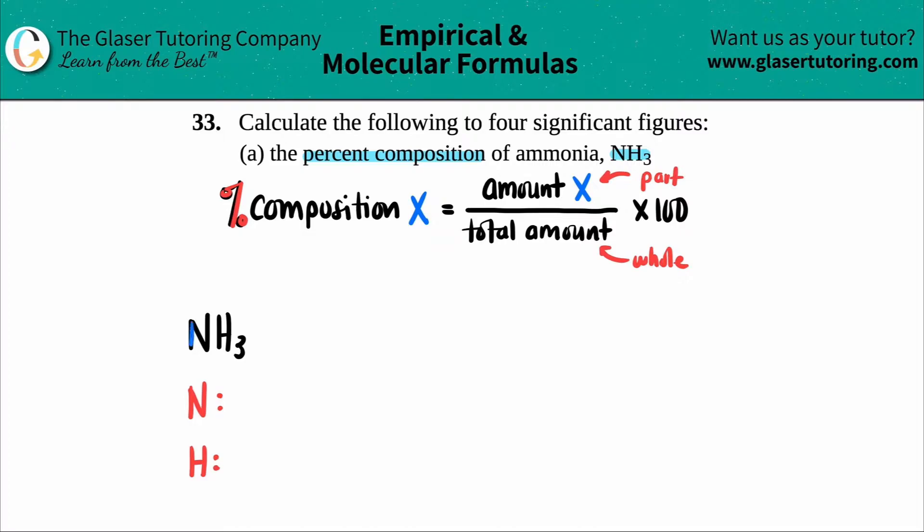So how many nitrogens? Well, here's the N. There's a secret one here. If you just have a random element, you only have one of it. There was no subscript down here, so there's a secret one here. So I have one nitrogen. And then for hydrogen, I see that three value. So that means I have three hydrogens.